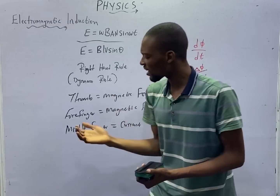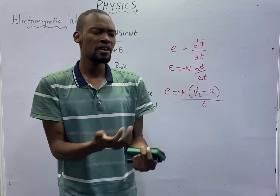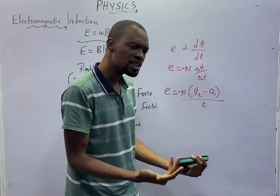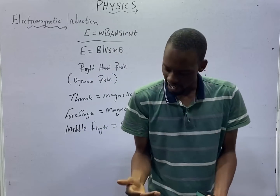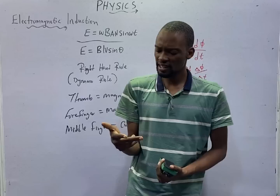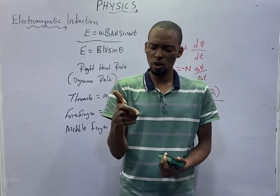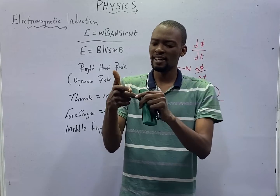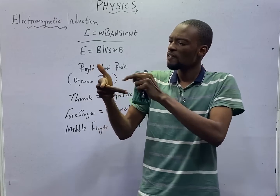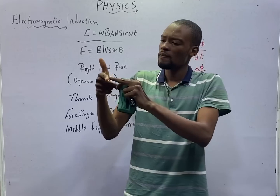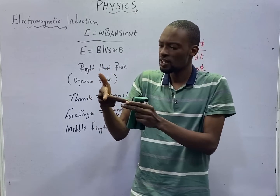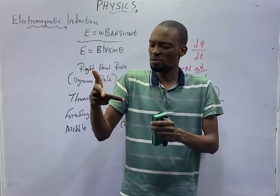The direction of the induced EMF can be given by Fleming's right hand rule. Fleming's right hand rule states that if you bring out your right hand and place your thumb, forefinger, and middle finger perpendicular to each other — if the thumb, forefinger, and middle finger of your right hand are placed perpendicular to each other...